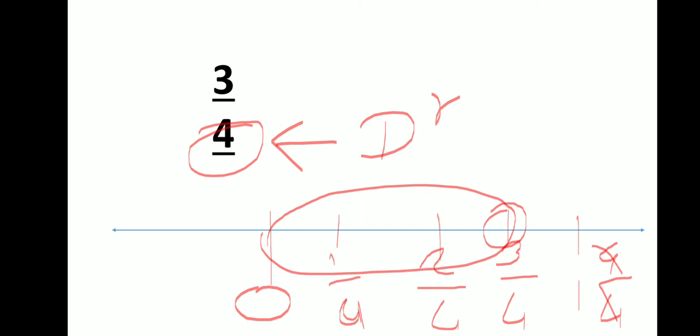So what is the procedure for showing a fraction on a number line? First, take a number line, then take a unit distance, then see the denominator of the given fraction, and divide the number line from zero to one into equal parts as given by the denominator.